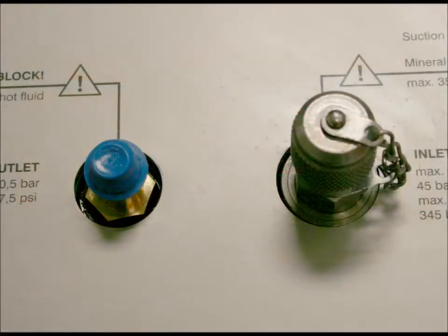This photo shows the inlet and outlet port. The outlet port on the left hand side uses a QD, and the inlet port on the right hand side uses a Schroeder check fitting. This fitting allows you to connect this unit up under pressure.